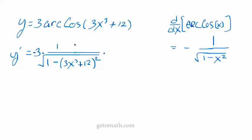Times. Now we take the derivative of the inside and bring it out. So the derivative of 3X cubed is 9X squared. And of course derivative of 12 is 0.